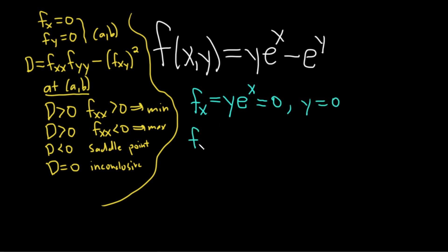Let's find the partial with respect to y. In this case, we treat everything that has an x as a constant. Differentiating this first term, e^x is a constant so it just hangs out. The derivative of y is 1, so we get 1 times e^x, which is just e^x. The derivative with respect to y of e^y is simply e^y. We set this equal to zero.